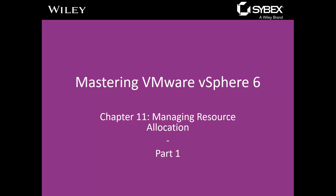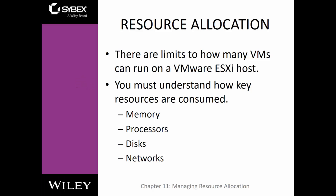Welcome to Mastering VMware vSphere 6. We're dealing with Chapter 11, Managing Resource Allocation. This is always a good chapter because when we talk about virtualization, we're normally talking about several VMs on a physical machine, whether it be centrally or decentrally managed. The interesting part is how do we manage the resources of that physical machine to all of the VMs? And that's a big part of what virtualization really is all about.